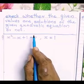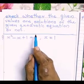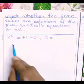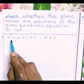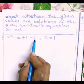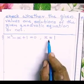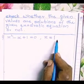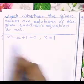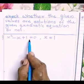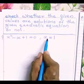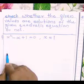Check whether the given values are solutions of the given quadratic equation or not. Question number 1: x² - x + 1 = 0. The value of x is given as x = 1. We need to check whether x = 1 is a solution of the given quadratic equation or not. For that, just substitute the value of x in the given equation.